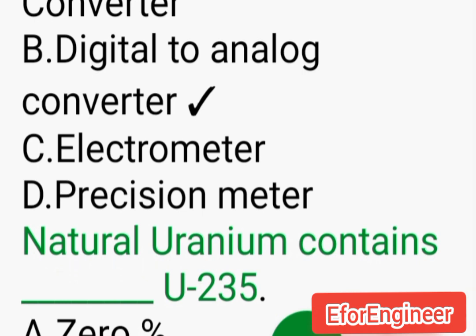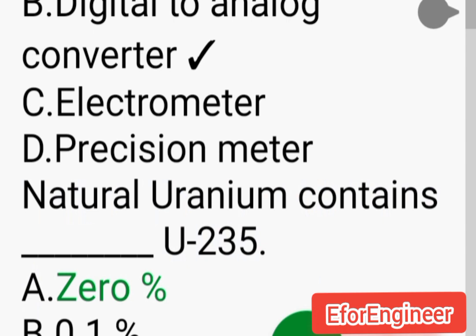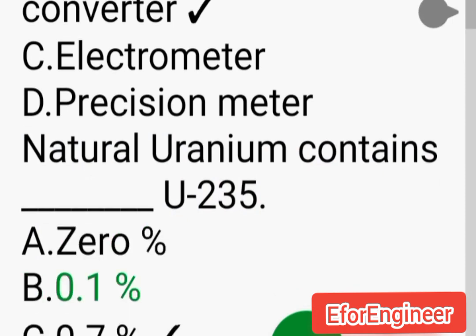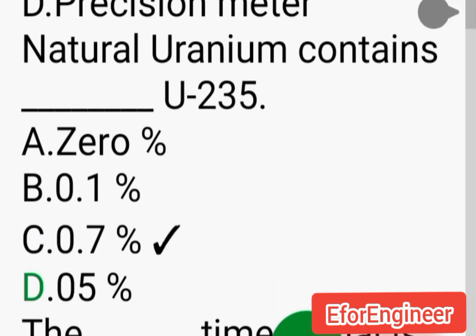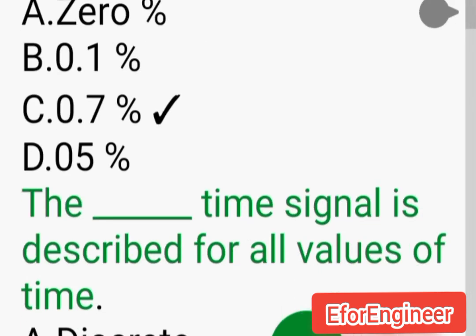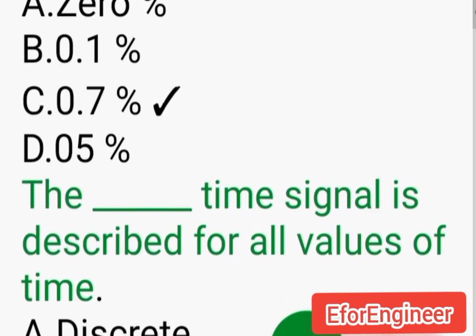Natural uranium contains ___ U-235: A. 0%, B. 0.1%, C. 0.7%, D. 0.5%.